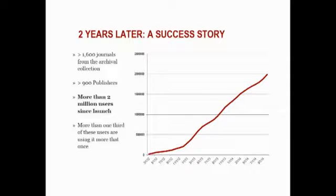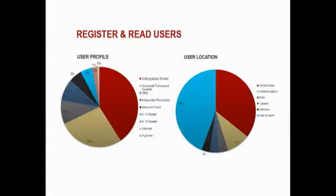By the end of 2013, we had 1,300 journals in the program and reached our one millionth user. Over the past year, that figure has grown to two million users — achieved just about last week. There are now more than 1,600 journals in the program, all through publisher participation; they opt in. Of these two million users, more than a third are repeat users.